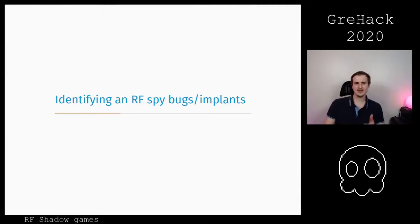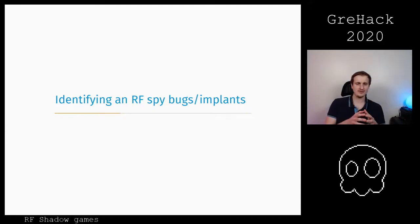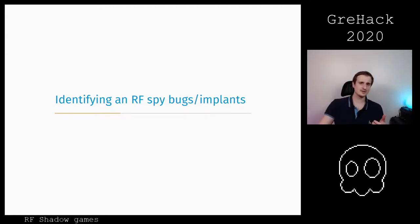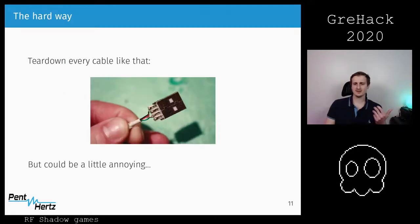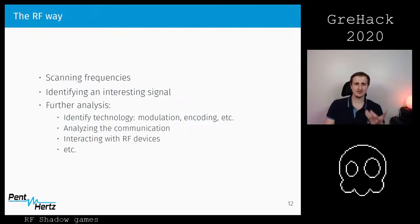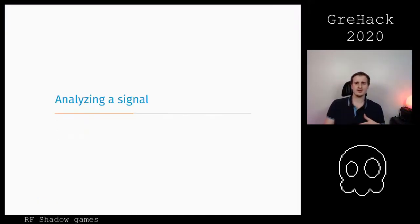This is difficult because some devices also use the 433/434 MHz bands, so at some point you will have to use a Faraday cage to be sure the device is communicating or not. If it doesn't use Wi-Fi or Bluetooth, you'll have to do some guessing. To isolate the signal you use a Faraday cage. The hard way is to tear down the device or cable. The practical RF way is to scan frequencies, identify an interesting signal, and do further analysis.